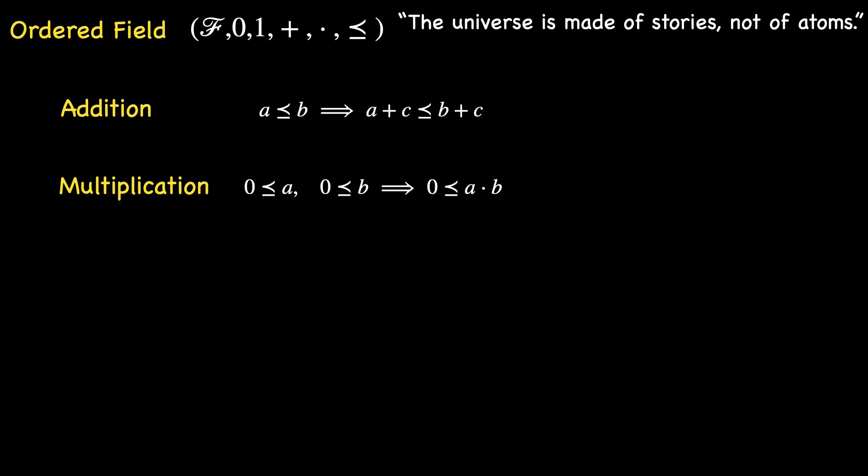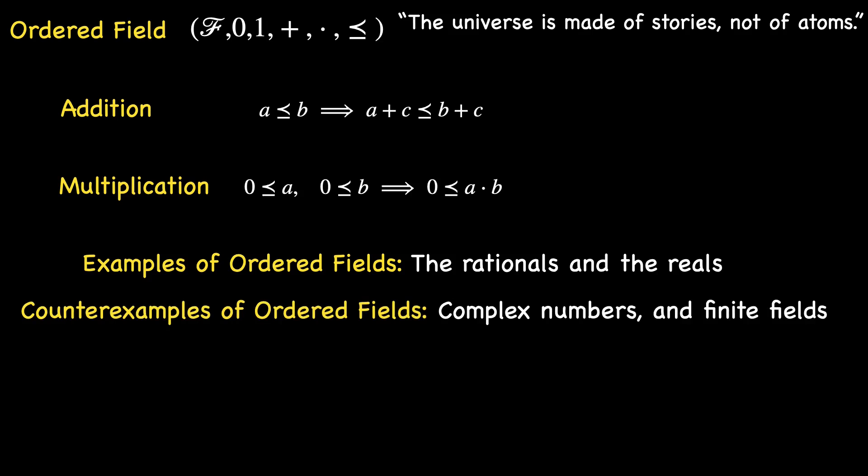Among the illustrious examples of ordered fields stand the rationals and the real numbers, both adorned with their familiar orders. Yet, it is crucial to note that not every field can be gracefully transformed into an ordered field. A compelling proof illuminates that neither the complex numbers nor finite fields can don the cloak of ordered fields.